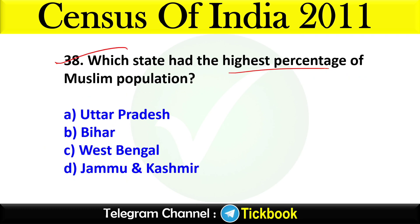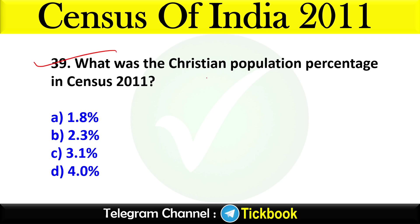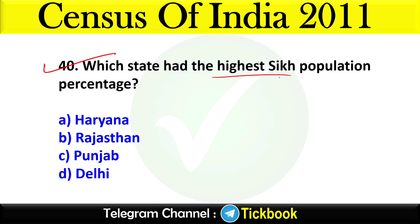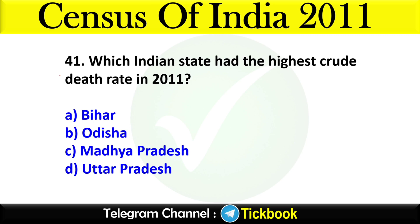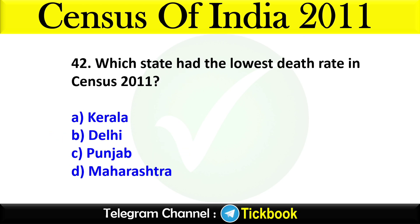Question thirty-eight: Which state had the highest percentage of Muslim population in Census 2011? Option D: Jammu and Kashmir. Question thirty-nine: What was the Christian population percentage in Census 2011? Option B: 2.3 percent. Question forty: Which state had the highest Sikh population percentage? Option C: Punjab. Question forty-one: Which Indian state had the highest crude death rate in 2011? Option B: Odisha is the right answer.